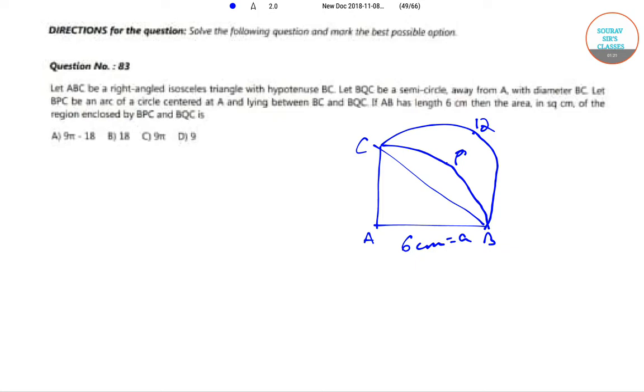CQB is an area, now is a semicircle with radius A by root 2. Now this has come out as follows: CA is equal to AB is equal to A, since this is an isosceles triangle. Now using Pythagoras theorem, BC squared is equal to A squared plus A squared, or BC is equal to root 2 A. And so the radius would be root 2 A by 2, which is equal to A by root 2.